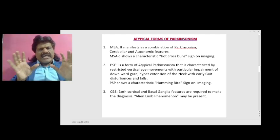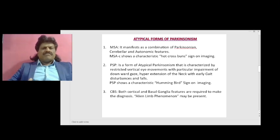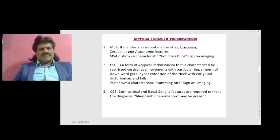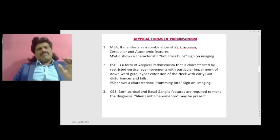For neurodegenerative disorders and other forms of parkinsonism, causes include Wilson's disease, Huntington's disease, neurodegeneration with brain iron accumulation, spinocerebellar ataxia type 3, fragile X-associated ataxia, prion disease, X-linked dystonia parkinsonism, and dopa-responsive dystonia. Now let's discuss the atypical forms of parkinsonism.